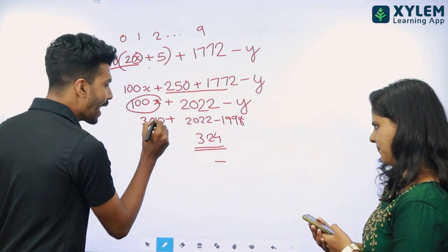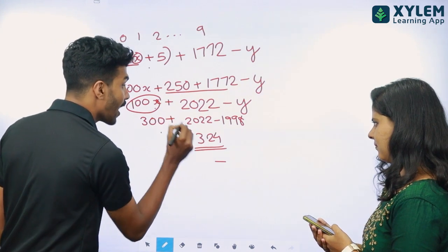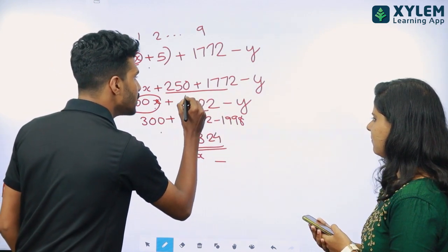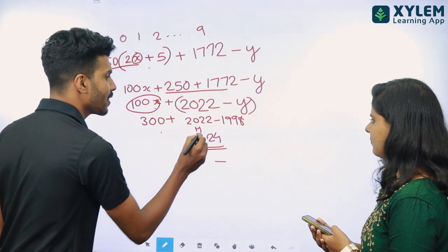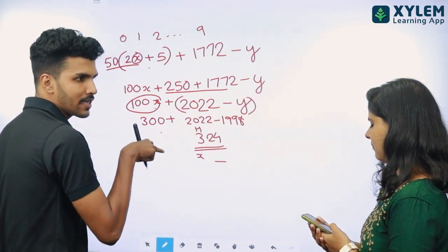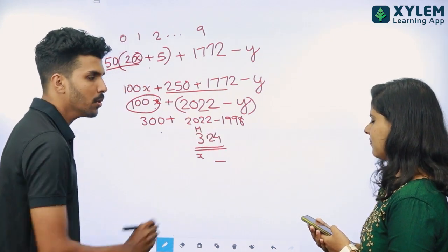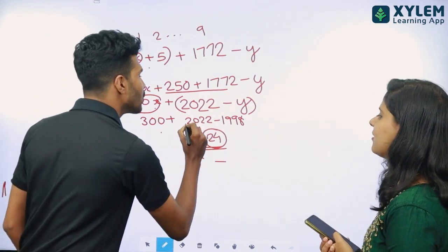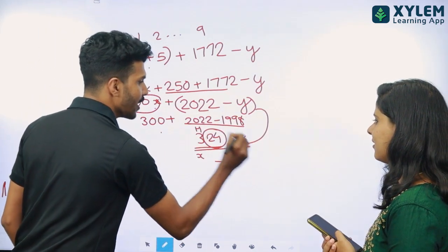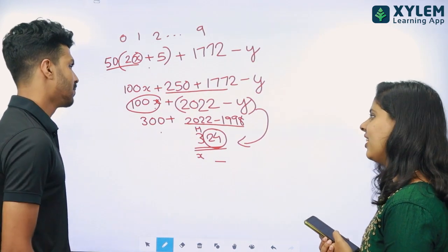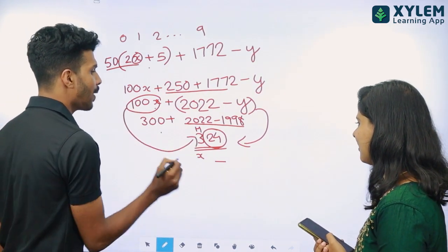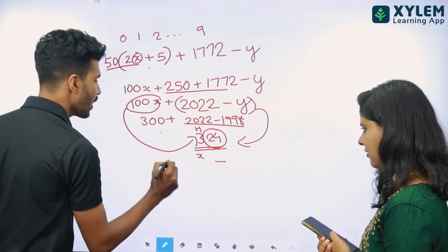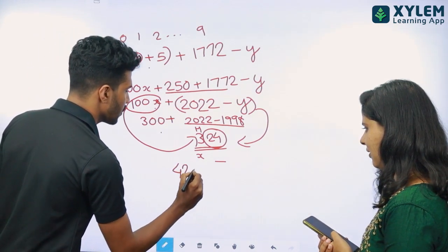Now we have 300x. The x equals 100. Place value is 100x. Now 2022 minus y — that's the tenth place. The tenth place means h. So, 2022 minus y is h. What is the third place? My last digit number is 4. So the third place is 4. And the fourth place is 25. So the fourth place is 425.